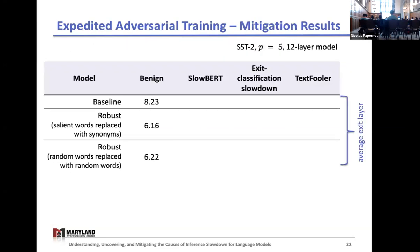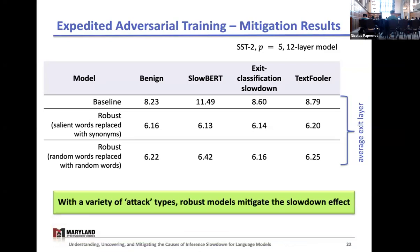We also tested this method against samples that had been slowdown attacked. Here are the results for SST2. I'm comparing a baseline model trained with the original dataset to two robust models trained with augmented datasets using slightly different methods of creating synthetic samples. With the benign samples, there's quicker exiting with the robust models. I'm including three different methods for inducing slowdown: the slow bird attack that intentionally causes slowdown, the exit classification attack I introduced, and the TextFooler attack that inadvertently causes slowdown as a misclassification attack. We see a decrease in average exit across all attack types—and keep in mind that layer six is the earliest possible exit with patience five. We have more results with more datasets in the paper, but across all attack types, we can mitigate this slowdown effect.